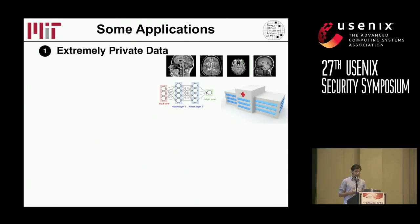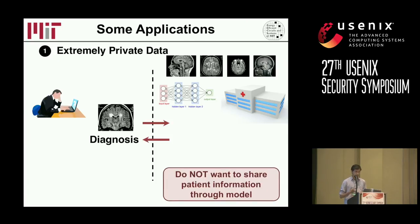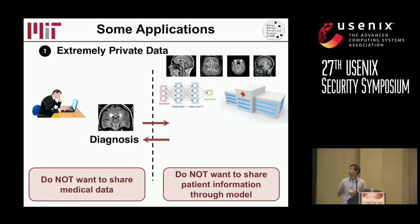There are some natural applications, for example when the data itself is extremely private. Say it's medical data that a hospital owns and uses to train a machine learning model to classify certain diseases, and then there's a patient who comes along and wants a specific diagnosis on a specific image. In this setting, we don't want to share the complete model with the patient because it might contain information about other patients, while at the same time it would be nice if the user didn't have to share his medical data when requesting classification on a single input.